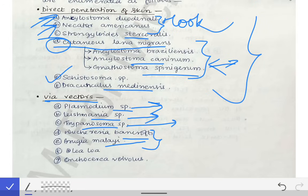Then Loa loa and Onchocerca volvulus. These are all the parasites which get entry to the human body through the skin but via a vector.